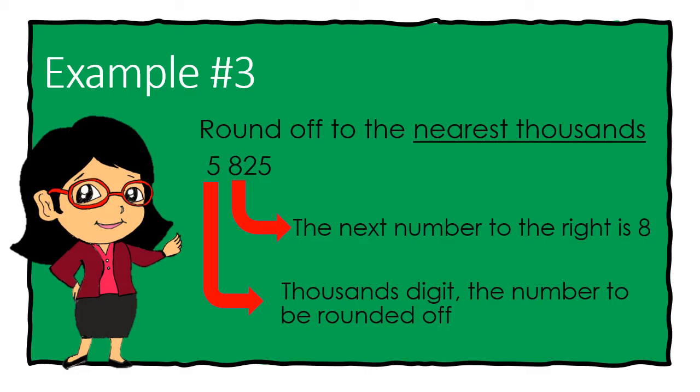Since 8 is more than 5, then 5825 rounded off to the nearest thousands is 6 thousands. We add 1 to number 5 and turns all the numbers to its right into 0.